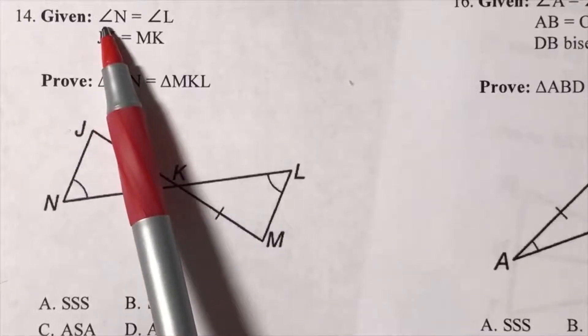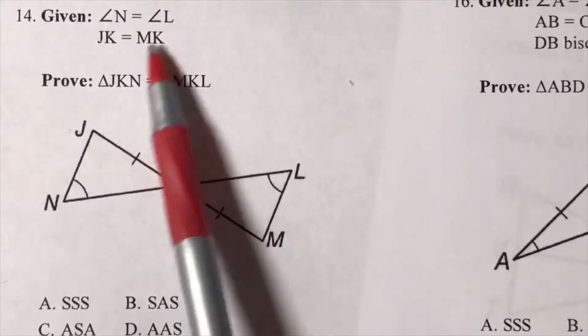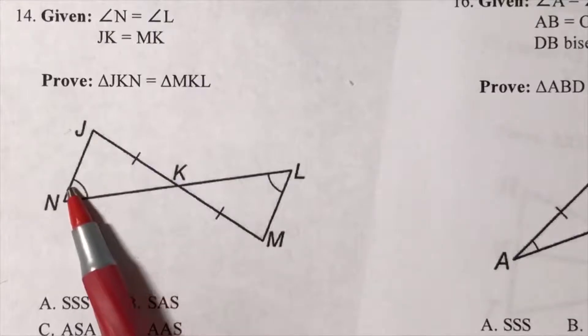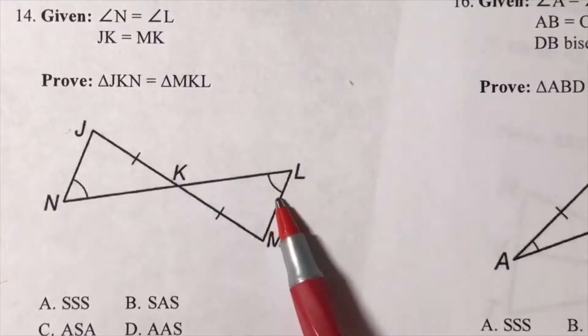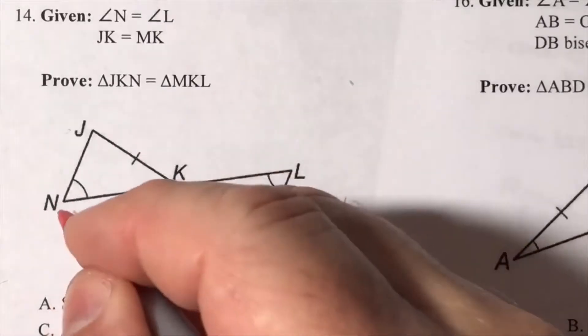Looking at the given, we see angle N is equal to angle L. Come down here, we already have the mark on here for the arc for the angle, so that means I have an angle here.